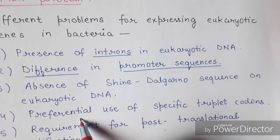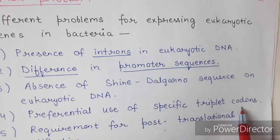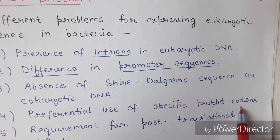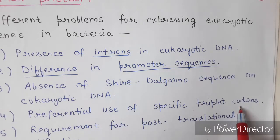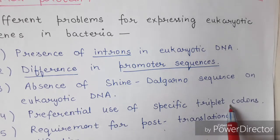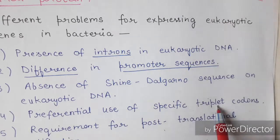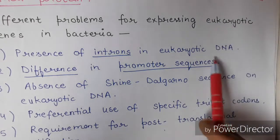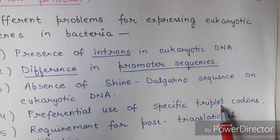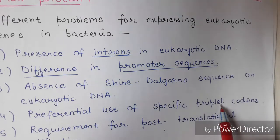The fourth problem is that prokaryotic and eukaryotic cells use different types of codons to express the same protein. As you know about the degeneracy of the genetic code, the same protein can be coded by different codons. The prokaryotic cell uses different codons to express a protein, so if you place your eukaryotic gene into the bacterial cell, it is not necessary that the codon in the eukaryotic DNA will express the same protein with the same efficiency.